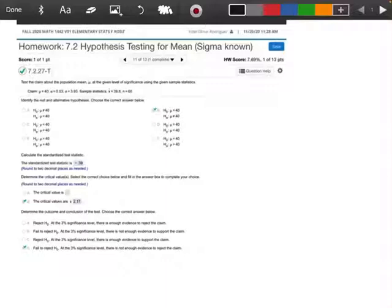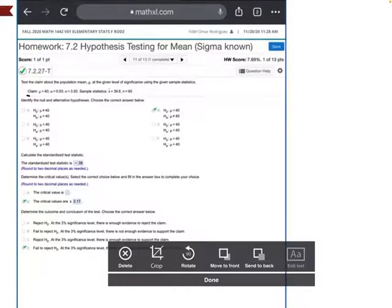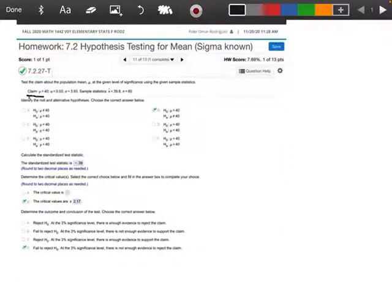Okay, so the first thing it tells me right here, it says my claim is that mu is equal to 40. So right here, we're going to say mu equals 40, and this is our claim.